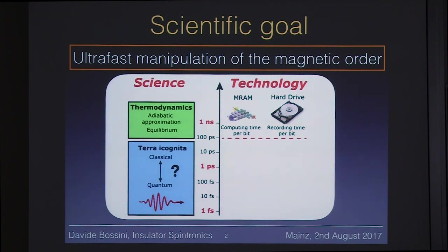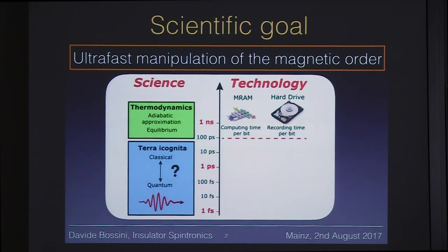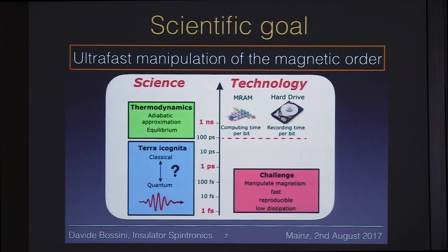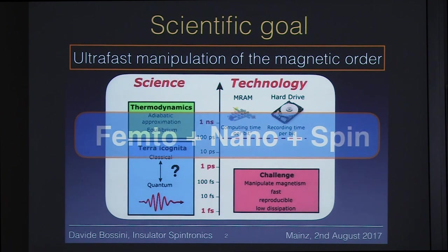The experimental tool allowing this kind of experiment is a femtosecond optical laser pulse. These studies may become relevant for technology, provided that some challenges are met. First, we need to learn how to manipulate magnets on the femtosecond time scale, but that's not enough — we must do this in a controlled, reproducible way, and by minimizing energy dissipation. To sum up the entire goal of this research activity in three words: femtosecond, nano, and spin.